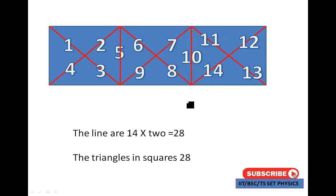Then I will add another square. Then the lines are 14 into 2 equals 28. The triangles in square is 28. It is a very easy trick. Then I will change the pattern. Just like it is a horizontal pattern, I will add the vertical square.